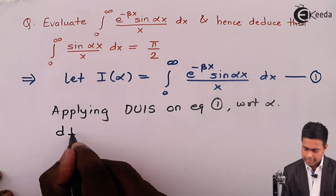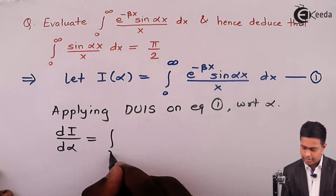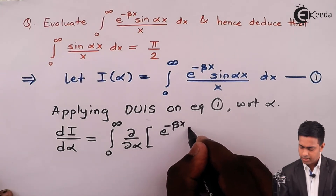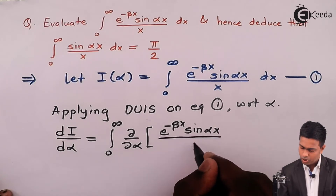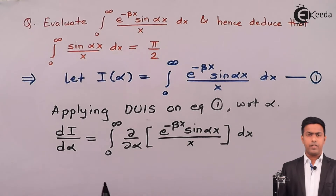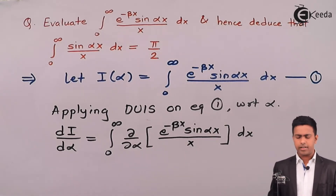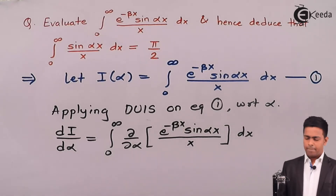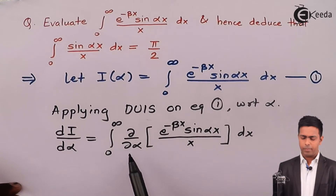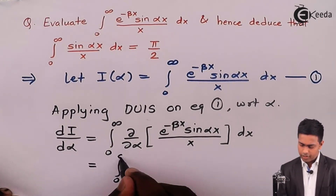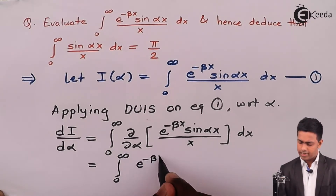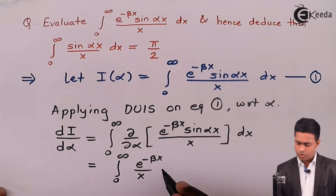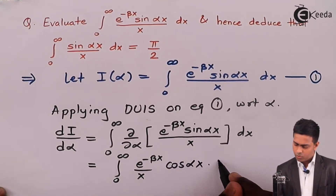By the rule of DUIS, dI by d alpha equals integration from 0 to infinity of the partial derivative with respect to alpha of e raised to minus beta x times sin(alpha x) upon x, dx. This is the definition of DUIS — we take the partial differentiation with respect to the parameter inside the integral sign. Differentiating partially with respect to alpha: e raised to minus beta x and 1 upon x remain as constants, and the derivative of sin(alpha x) is cos(alpha x) times x.